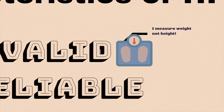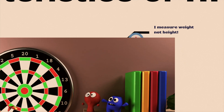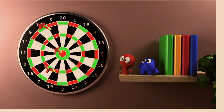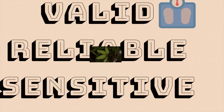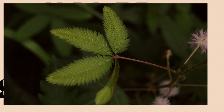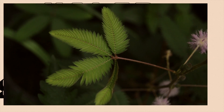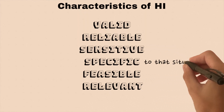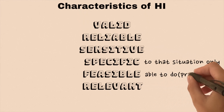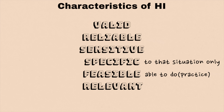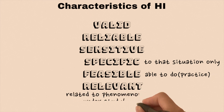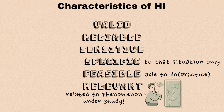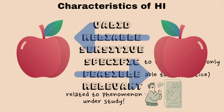Valid means they actually measure what they are supposed to measure. Reliable means the answers should be the same if measured by different people in a similar situation. Sensitive means they should reflect the changes in the situation concerned. Specific means they should reflect changes only in the situation concerned. Feasible means we are able to obtain the necessary information. Relevant means they should be related to the phenomena we are studying. The purpose of these qualities is to make sure that we are comparing an apple with an apple.